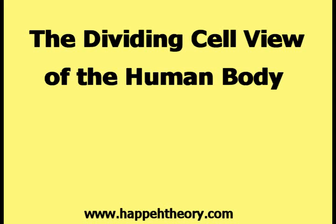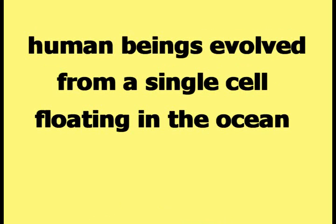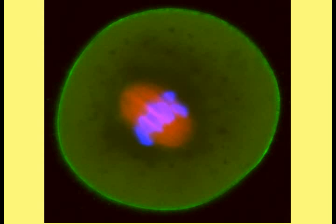This video is about the dividing cell view of the human body. According to Darwin's theory of evolution, human beings evolved from a single cell floating in the ocean, similar to the one shown in this picture.